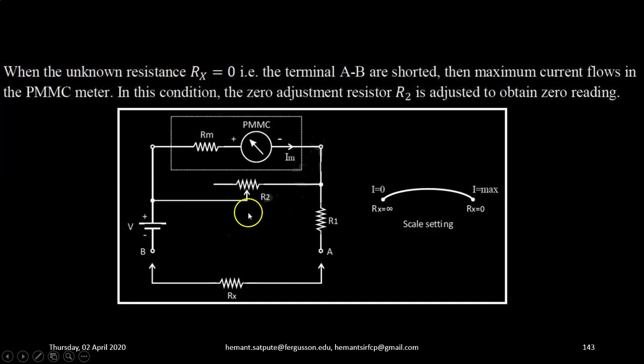When unknown resistance Rx equals 0, that is, terminals A and B are shorted, then maximum current flows in the PMMC meter. In this condition, the 0 adjustment resistor R2 is adjusted to obtain the 0 reading. So here, look at the scale reading. When Rx is 0, this external unknown resistance is 0, then current will be maximum.